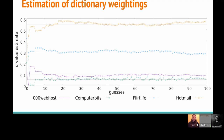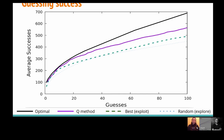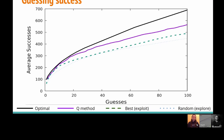We also showed that this improves guessing success. What I've plotted next is the average number of successes. The black line is the optimal number of successes — if you guess every single password in the exact right order. Below that we have our Q method, which uses the weightings to make effective guesses by choosing from all four dictionaries according to the weightings. We can see that just choosing from what we consider to be the best dictionary does slightly worse — that's the dashed line — and then choosing randomly is below that again, shown as the dotted line.